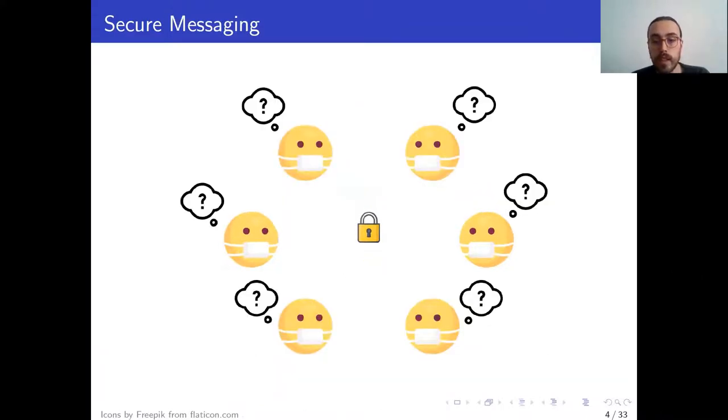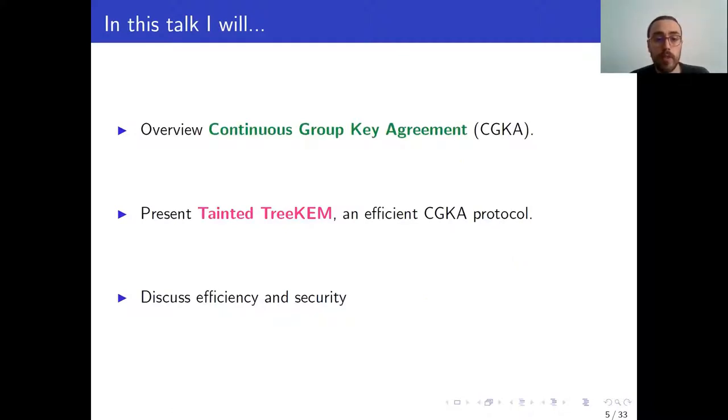However, the group setting is not as well understood. And accordingly, in this talk I will give you an overview of a primitive called continuous group key agreement, which is at the core of this secure group messaging setting. I will present an instantiation of it, which we call Dainty TreeKEM, and I will discuss its efficiency and security.